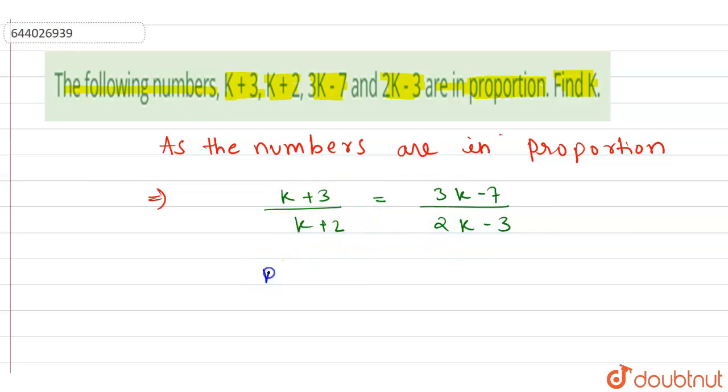So if we cross multiply, this will become K+3 into 2K-3 equal to 3K-7 into K+2.